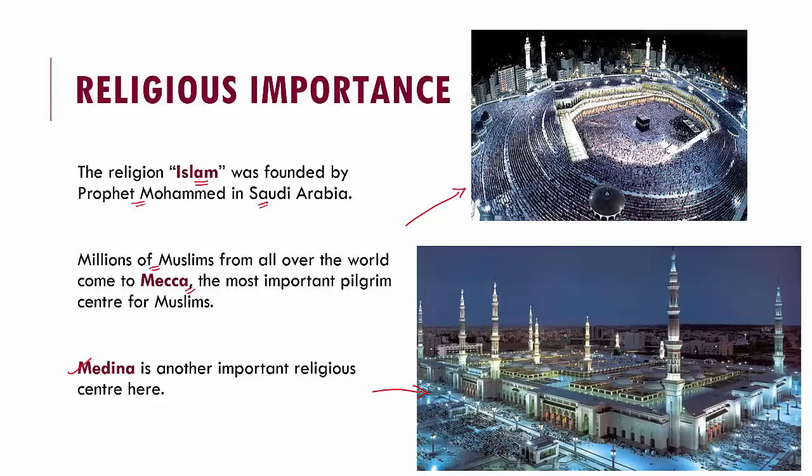Saudi Arabia is the best example to show that even a land as hot, dry, and barren as this can be converted into a rich and prosperous place. The government has intelligently used its natural resources for the benefit of its people — something we should all learn from.